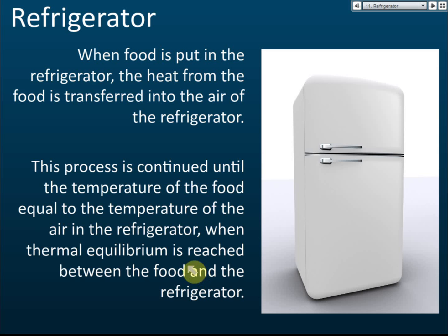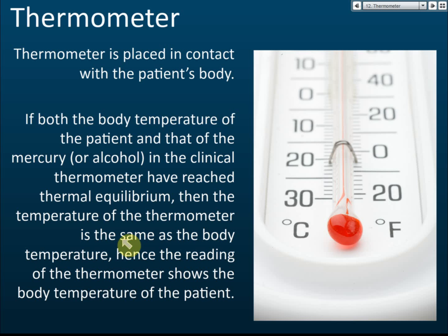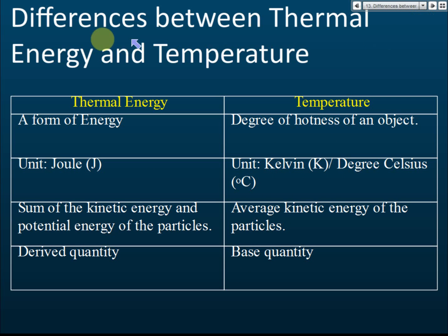Another application is the thermometer. To measure the temperature of a patient's body, you must place the thermometer in thermal contact with the patient. When the body temperature and the mercury in the clinical thermometer reach thermal equilibrium, the temperature of the thermometer equals the body temperature. We must keep it in contact with the body for a few minutes to allow thermal equilibrium to be reached. When you then read the thermometer, you get the body temperature.